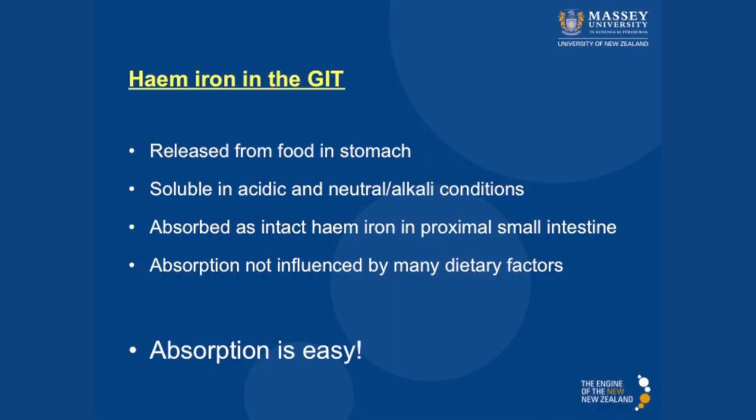So when we consume heme iron — which is present in red meat, pork, fish, poultry, and eggs — that heme iron goes into the stomach, where it's bound within proteins like hemoglobin. The heme iron comes off the hemoglobin and is released into the stomach. That heme iron is soluble both under acidic conditions like the stomach and also in the small intestine, which is an oxidising environment. That heme iron is simply taken into the small intestine, heme iron absorption occurs there, and the heme iron is taken up into the enterocyte. Heme iron absorption is really nice and simple — easy.